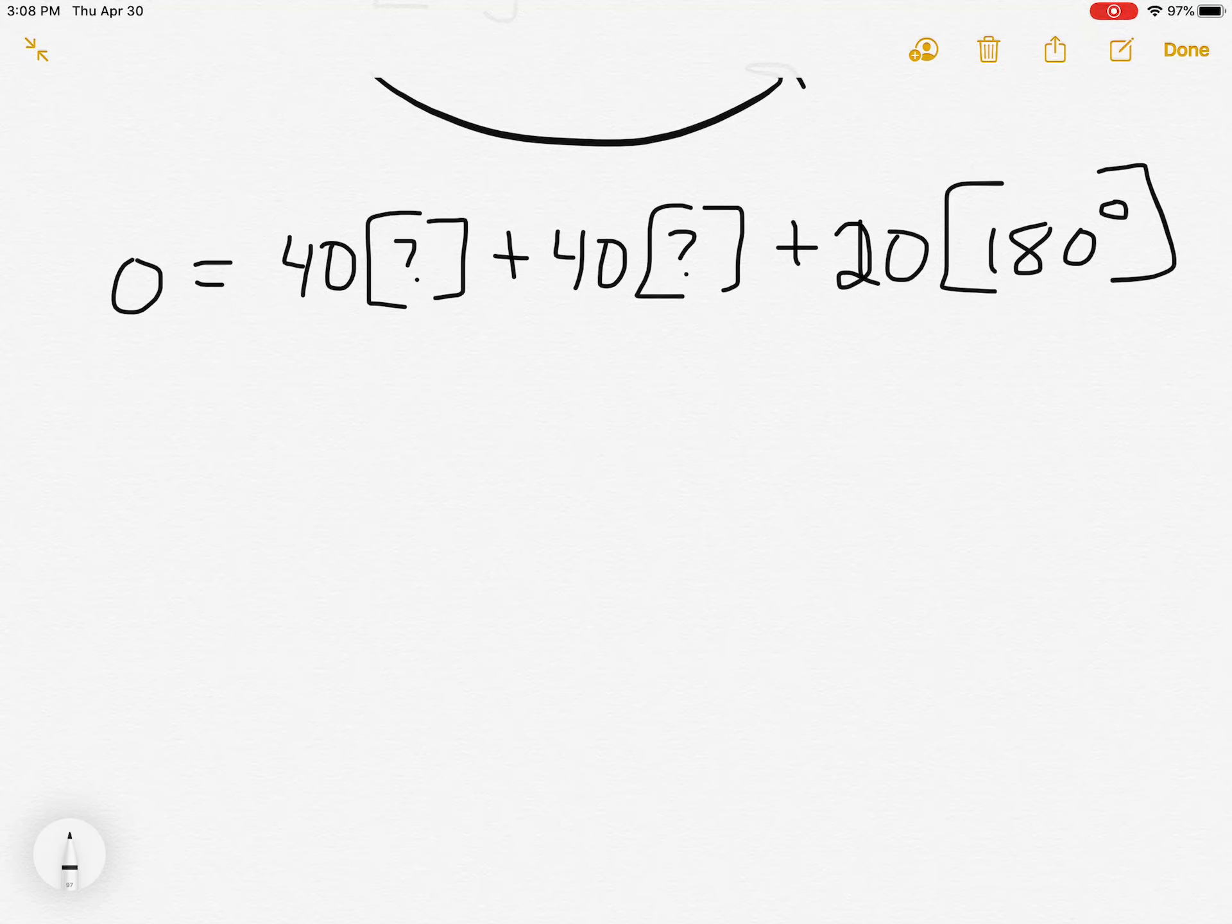Remember that trick. Now remember, when you add vectors, you draw them tip to tail, and they form triangles.